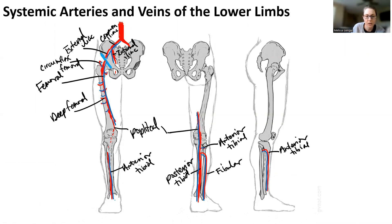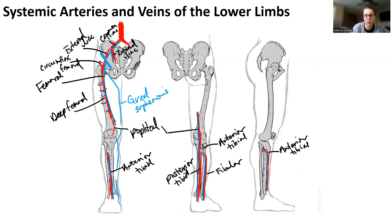The superficial vein runs on the medial aspect of the leg, and it drains into the femoral — this is the great saphenous vein. Thinking about flow going backwards: fibular, posterior tibial, and anterior tibial all drain into popliteal. Popliteal, plus deep femoral, circumflex femoral, and great saphenous, all drain into femoral. Femoral drains into external iliac. External and internal iliac drain into common iliac, which drains into the inferior vena cava.